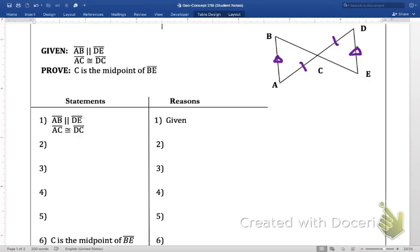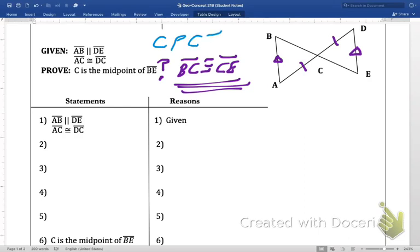Well, if C is a midpoint, what does that mean? Well, if C is the midpoint of BE in the diagram, that means we need to get BC congruent to CE. That's the goal. So, how are we going to do that? Well, if we could prove the two triangles congruent, that would prove the parts congruent.